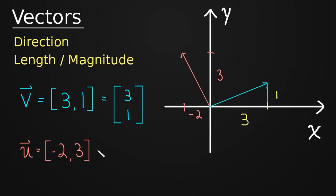And, of course, we could have written this as a column vector, negative 2, 3, if we wanted to. Okay, so we have that down.